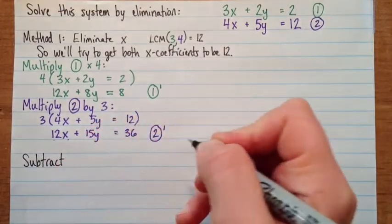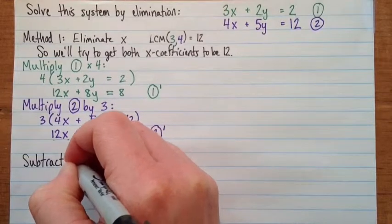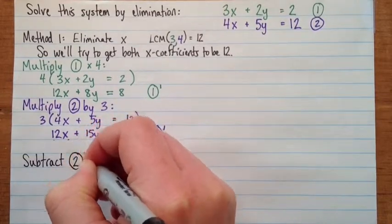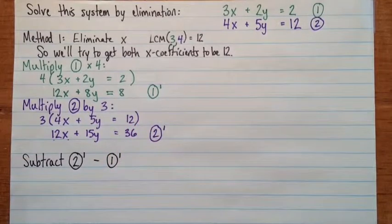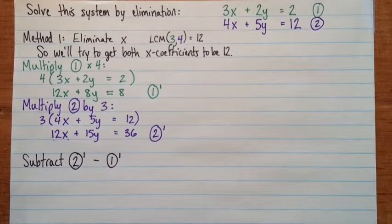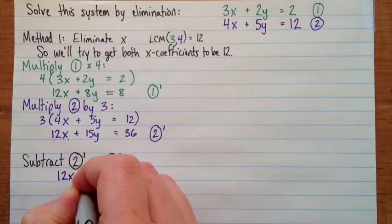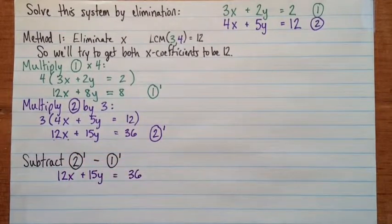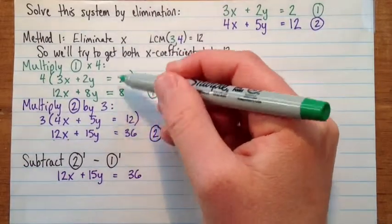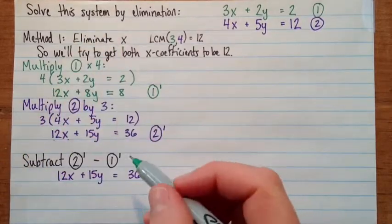So just to save me the time of writing an extra negative sign, I'm going to do 2 prime minus 1 prime. You'll get the same answer both ways. So it's not a question of one being wrong. It's just a question of one maybe being easier. So 2 prime is 12x plus 15y equals 36. And you've got to write this down again, even though it's up here, because if we're reading lines from all these different places all around the page, you're very likely to make a mistake.